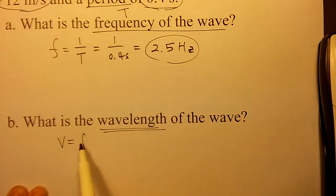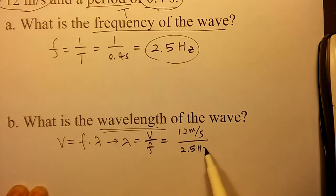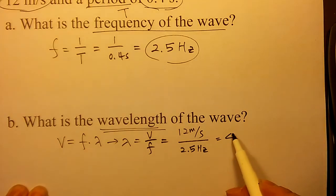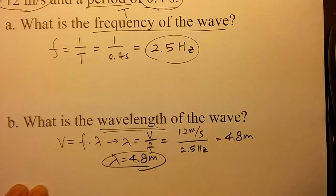V equals f times lambda. Then your lambda becomes v over f. V is 12 meters per second and your f is 2.5 Hertz, and then you will get 12 divided by 2.5 becoming 4.8 meters. Your lambda becomes 4.8 meters as your wavelength.